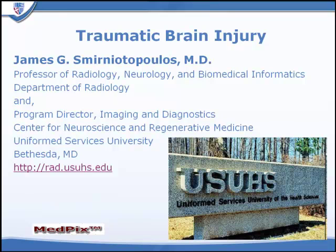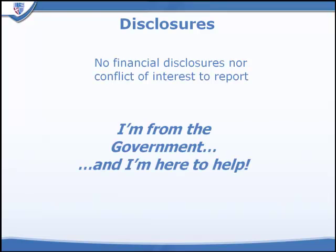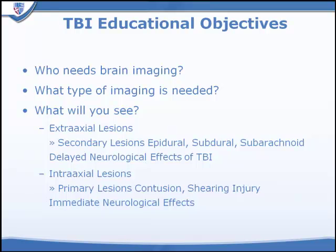We're going to be talking about traumatic brain injury. I have no financial disclosures. We're going to divide this talk up into several sections. We're first going to discuss who needs to have brain imaging after head trauma, what type of imaging is needed, and then we'll discuss the kinds of lesions that will be identified, beginning with extra-axial lesions and then talking about intra-axial lesions.